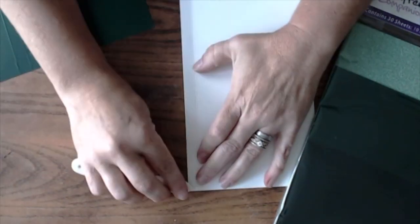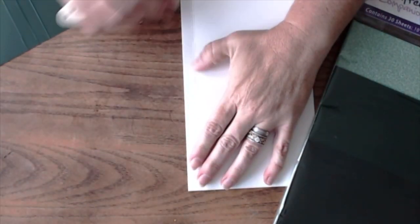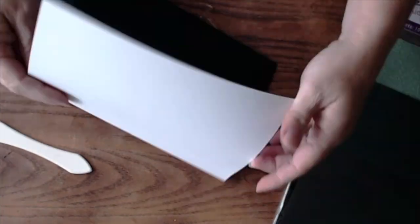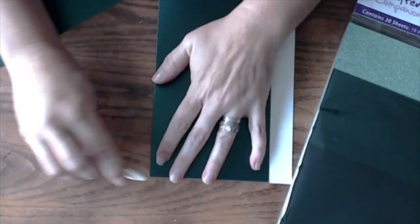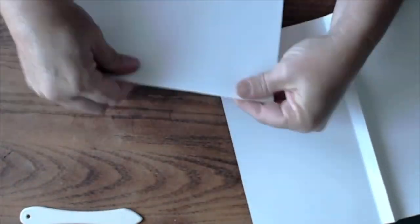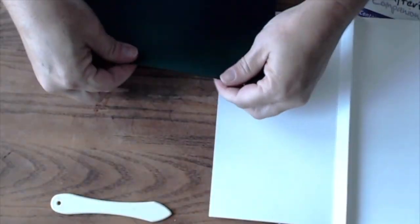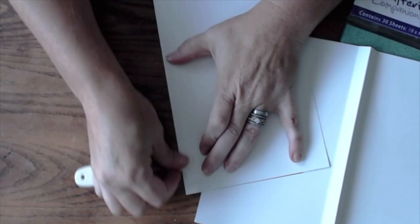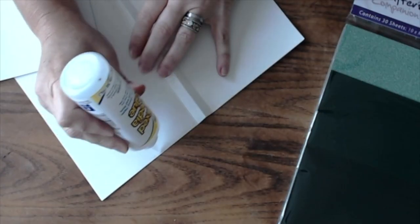Fold the covers in the opposite directions. One will fit inside the other to create a double-sided cover. Glue the two sides together.